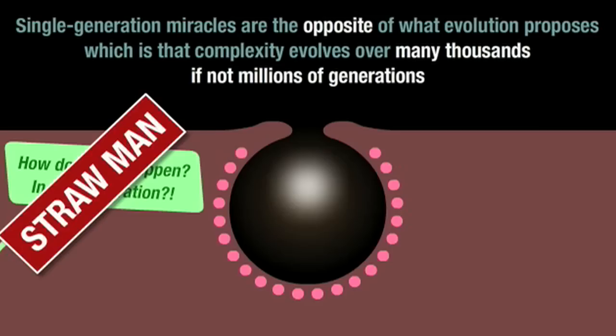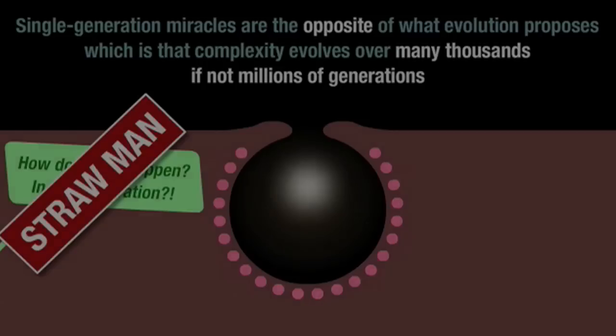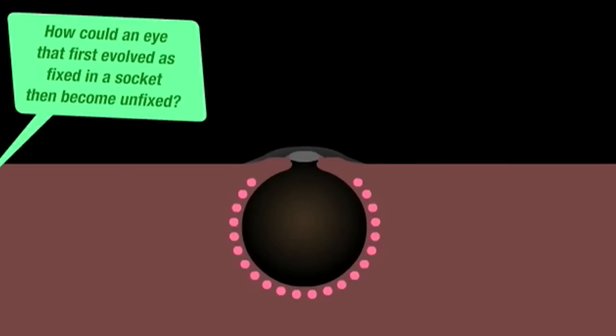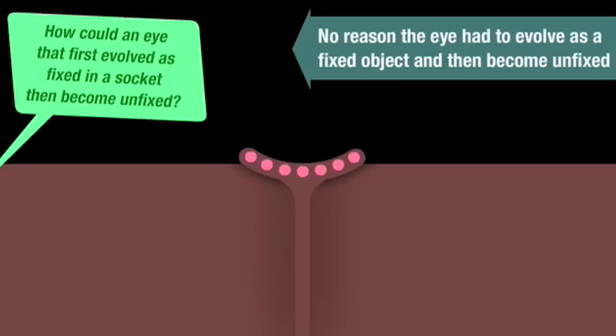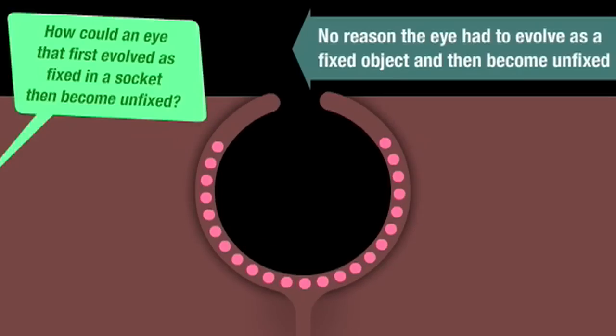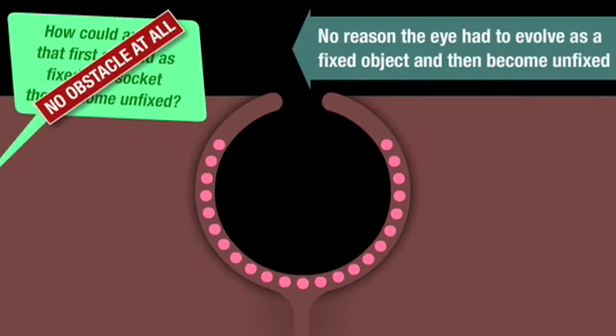One person claimed that the eye's movement within its surrounding structure presents an obstacle to evolution. How could an eye that first evolved as fixed in a socket then become unfixed? But there's no reason that the eye had to evolve as a fixed object and then become unfixed. Movement could easily have been there from the beginning, or as I suggested in my video, it could have evolved alongside the other beneficial changes. This presents no obstacle at all to evolution.